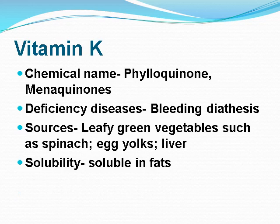Vitamin K: its chemical name is phylloquinone or menaquinones. Deficiency disease: bleeding diathesis. Sources include leafy green vegetables such as spinach, egg yolks, and liver. Solubility: it is soluble in fats.